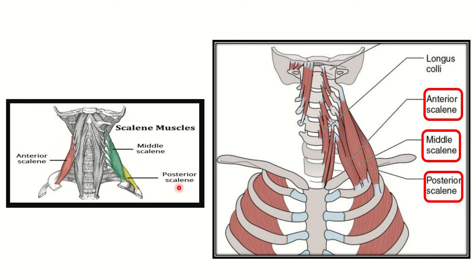The posterior scalene muscle also arises from the vertebral column but inserts into the second rib. This is the key difference: anterior and middle scalene insert into the first rib, while the posterior scalene inserts into the second rib.